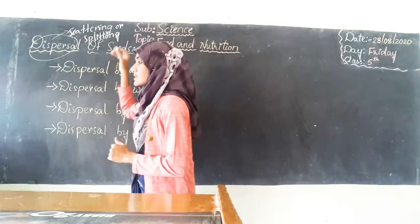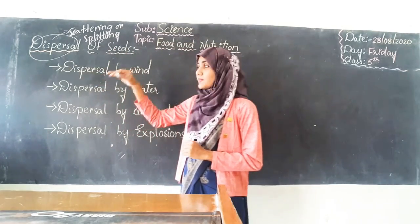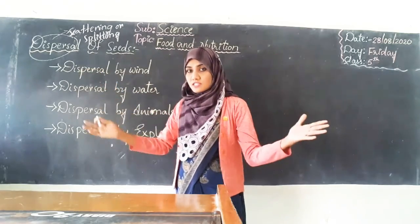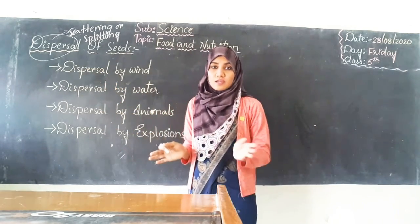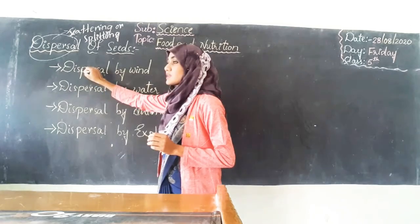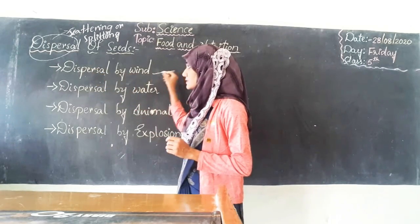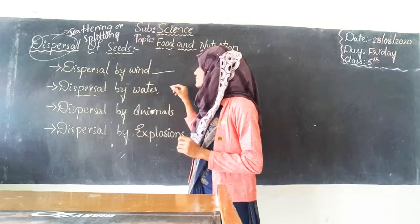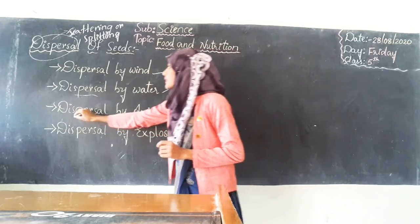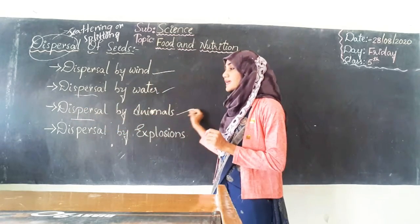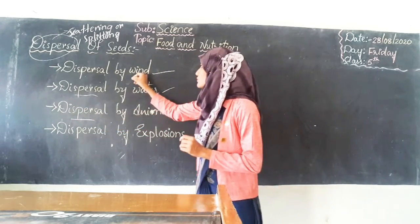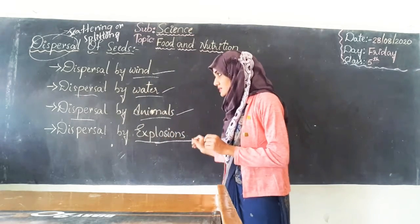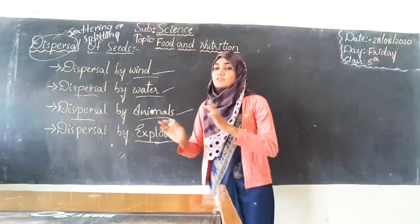So these seeds, they can disperse — disperse means they will scatter. Scatter means spreading all around. They will spread or scatter by wind. Next, they can disperse by water. The dispersal can take place by animals also — by wind, by water, by animal, and even by explosion.